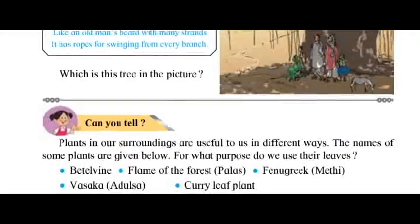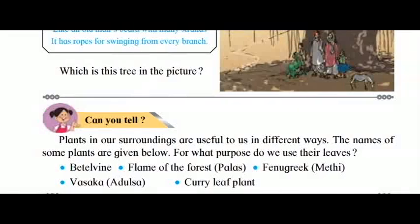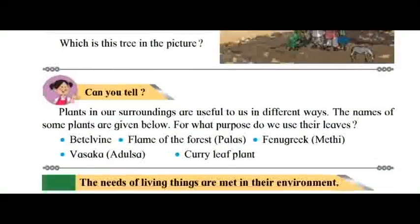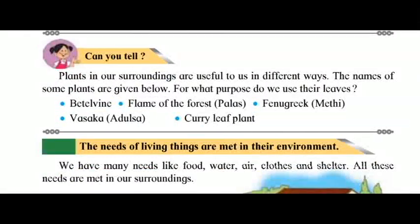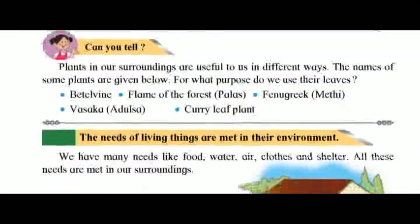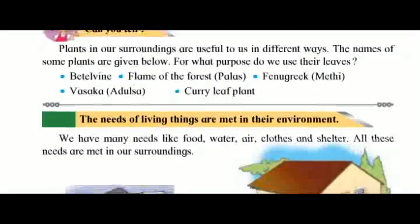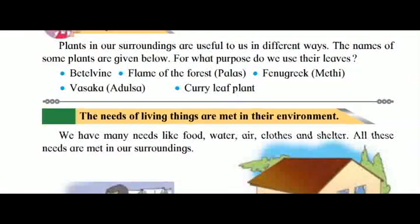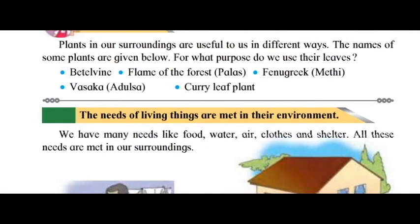Plants in our surroundings are useful to us in different ways. The names of some plants are given below. For what purpose do we use their leaves? Betelwine, flame of the forest, palas, fenugreek, methay, vasca, adelsa, curry leaf plant.